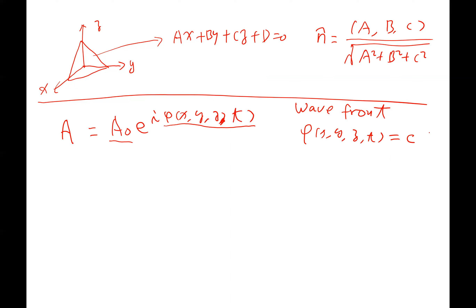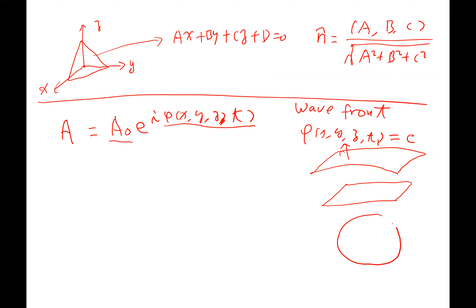If the wavefront is a plane, we call it a plane wave. If the wavefront is a spherical surface, we call it a spherical wave. For a plane wave, A = A₀ multiplied by the phase factor. The amplitude A₀ can represent any physical quantity — electric field, lattice vibration amplitude, etc.